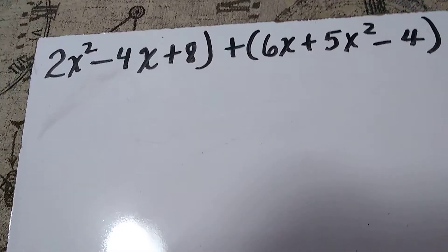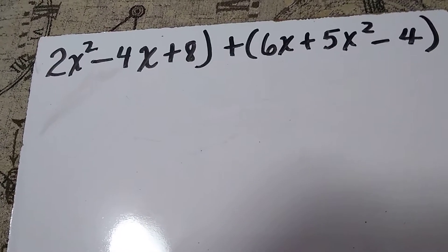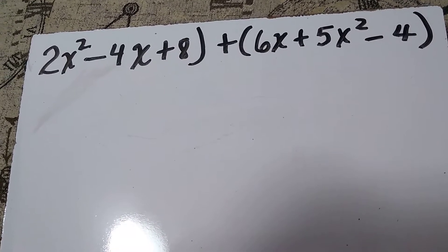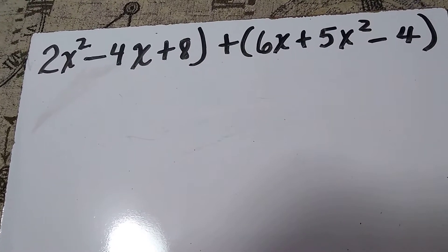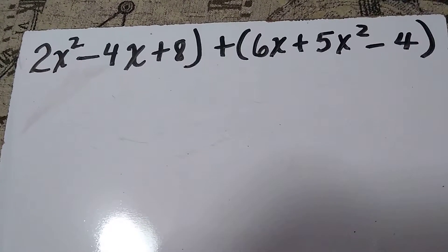So if you notice, we have an expression that starts with 2x² - 4x + 8, and we're going to add it to the expression 6x + 5x² - 4. If you notice, the terms are not always in the same order. They don't have to be, but in this case, it's not.